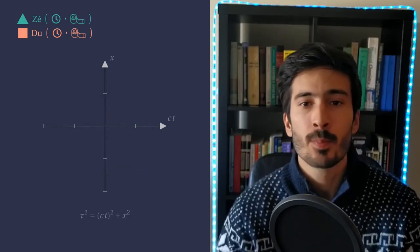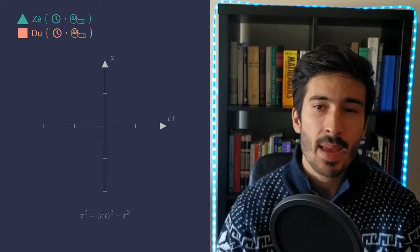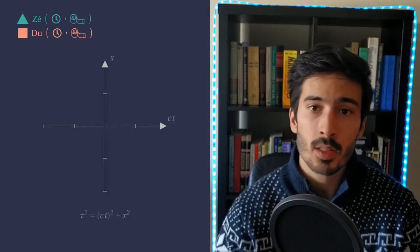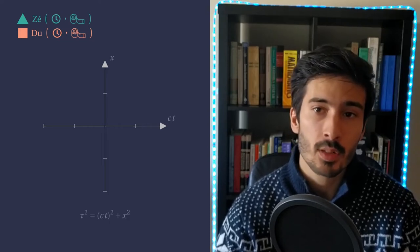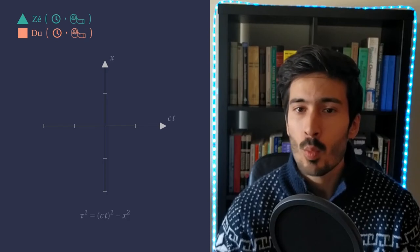So now, what can we do? We will follow the suggestions of Einstein and Minkowski and measure distances in spacetime a little differently. Instead of considering the square of the time coordinate, we will consider the symmetric of the square. We will see where this takes us.